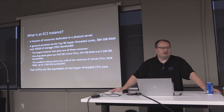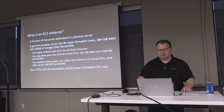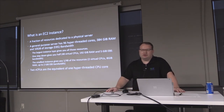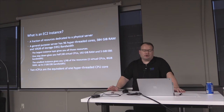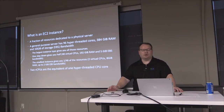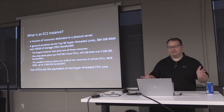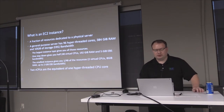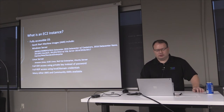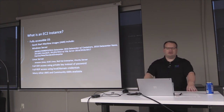One thing to keep in mind when sizing an instance going from on-premise to AWS is they go by a unit called virtual CPUs, or vCPUs. Two virtual CPUs is the equivalent of one hyperthreaded CPU core, so one vCPU is one thread of a dual hyperthreaded core.